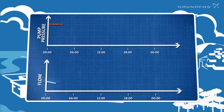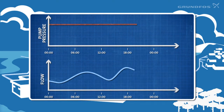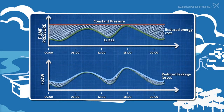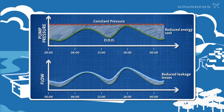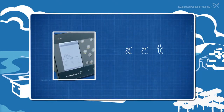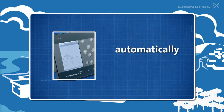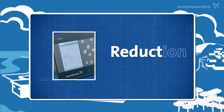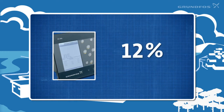Varying demand and higher flow leads to higher friction losses. If the constant pressure is set according to the friction losses at peak hours, the pressure in the pipe network will increase during quiet periods with less flow. But with flow-dependent pressure from the pump, the pressure stays the same, even at the critical point. The Control MPC adapts the pump pressure automatically to compensate for the flow-dependent friction loss. The net result is a reduction in water leakage of up to 20%.